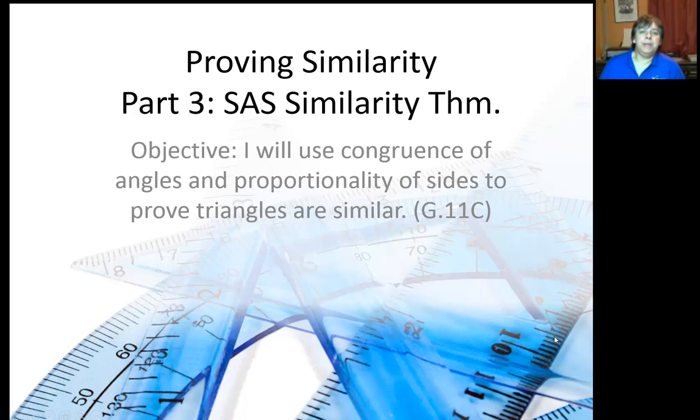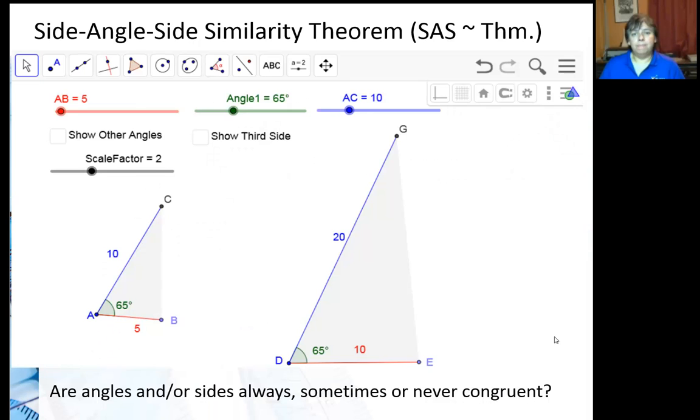Now we're going to look at the last similarity theorem, which is side-angle-side. I've created this applet where I have two triangles that have two sides that are proportional. The blue is proportional to blue, the red is proportional to red.